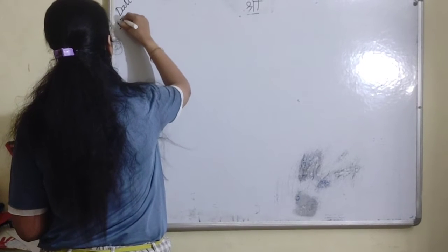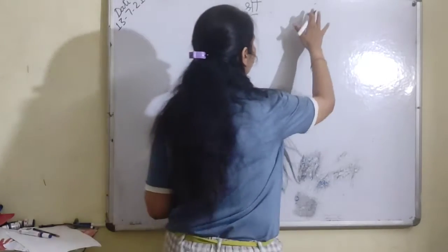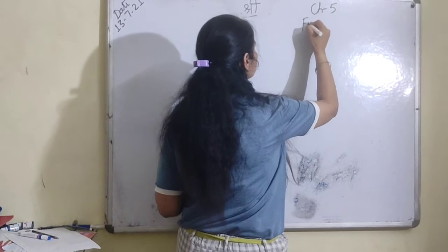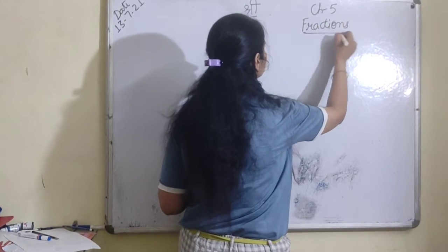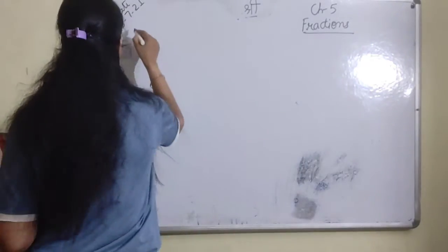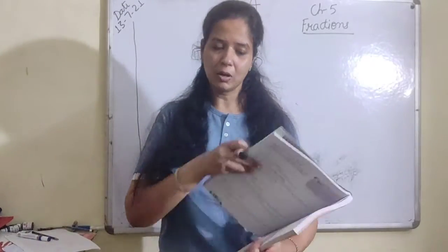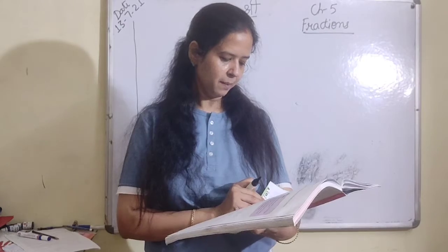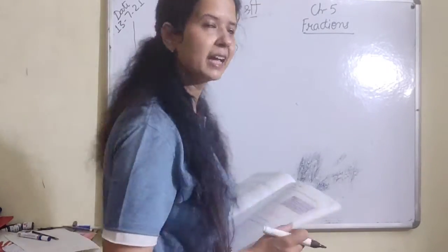It is 13, 7, 21. Which chapter are we doing? We are doing chapter number 5, Reactions of Reactions, because we have already done the finishing part in our previous video. Exercise on page number 76, Exercise 5A.